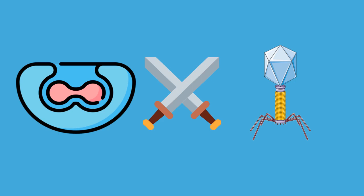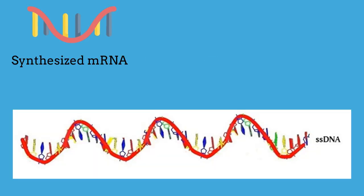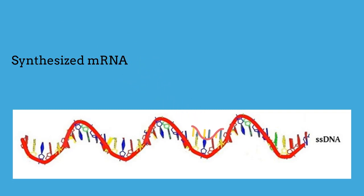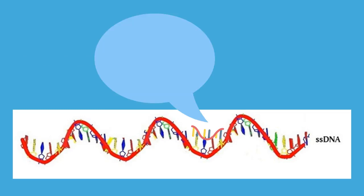Researchers have taken notes from this process and have used it to edit DNA through what is now known as CRISPR-Cas9. They create a small piece of RNA that binds to a specific target sequence in the DNA of a cell, similar to the RNA segment from the CRISPR arrays that attach to the virus's DNA. When introduced into cells, the guide RNA recognizes the intended DNA sequence, and typically the Cas9 enzyme cuts the DNA at the targeted location, just like in the case of the bacteria.